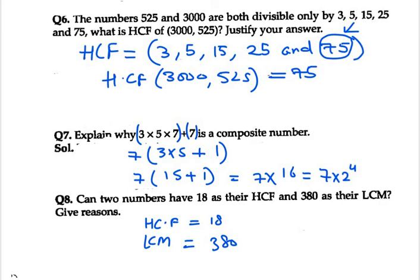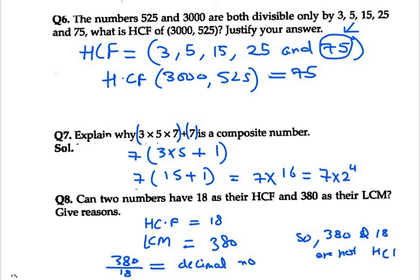If we divide 380 by 18 it must be a natural number. If it is not a natural number then we can't say that they are LCM and HCF. When we divide 380 by 18 we get a decimal number. When we divide LCM by HCF and get a decimal number, we can't say they are LCM and HCF of any two numbers. So 380 and 18 are not HCF and LCM of two numbers.